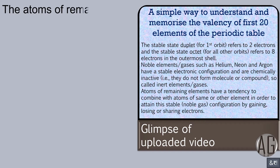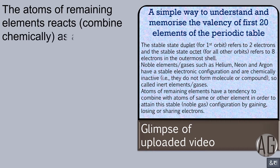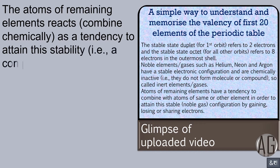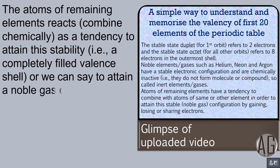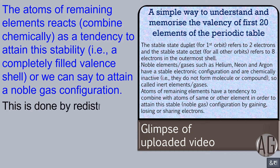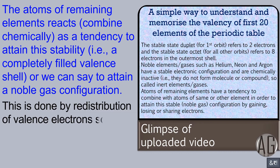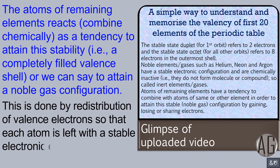The atoms of remaining elements react and combine chemically as a tendency to attain this stability — that is, a completely filled valence shell, or we can say, to attain a noble gas configuration. This is done by redistribution of valence electrons so that each atom is left with a stable electronic configuration.